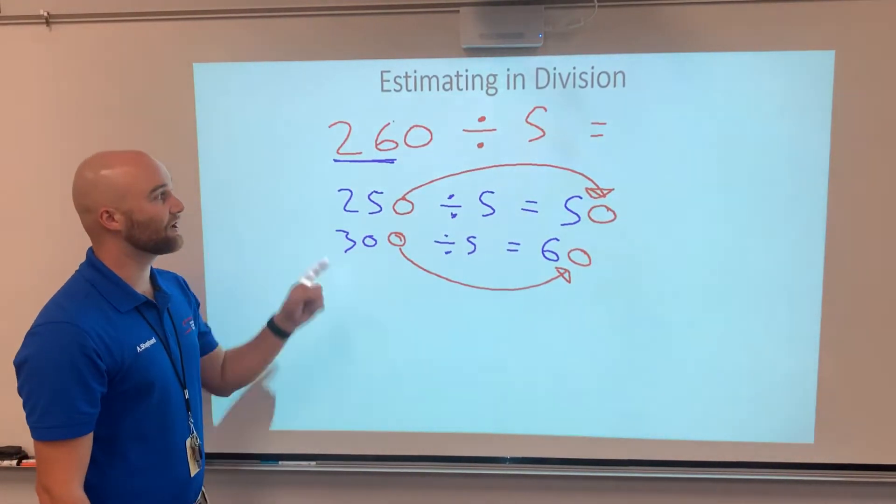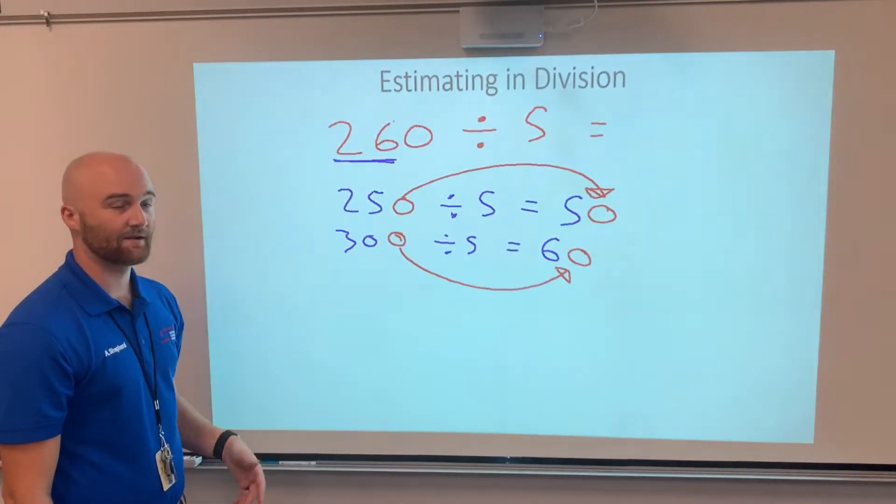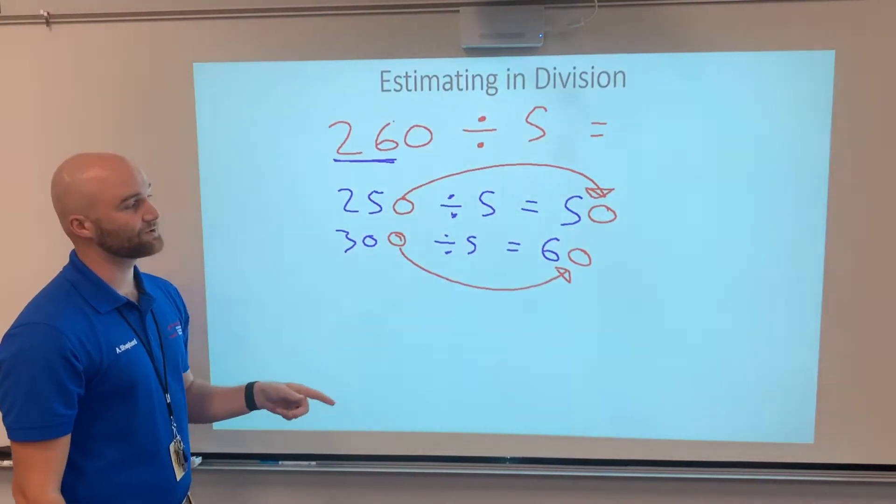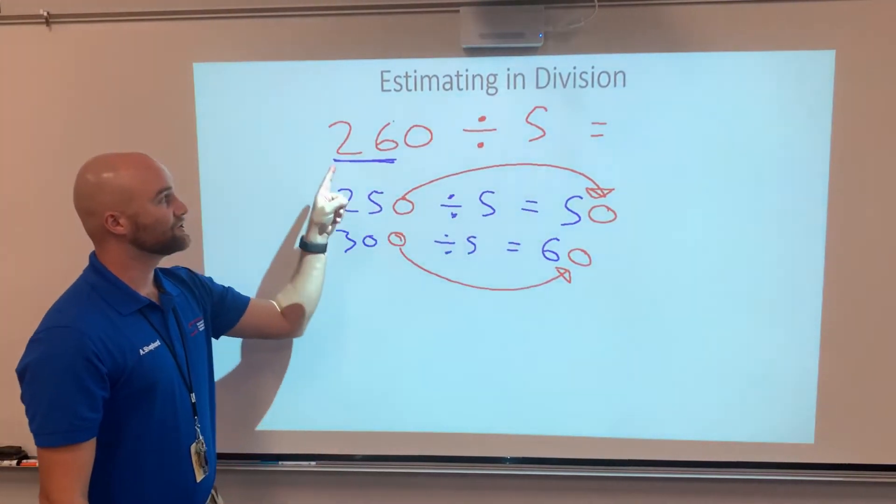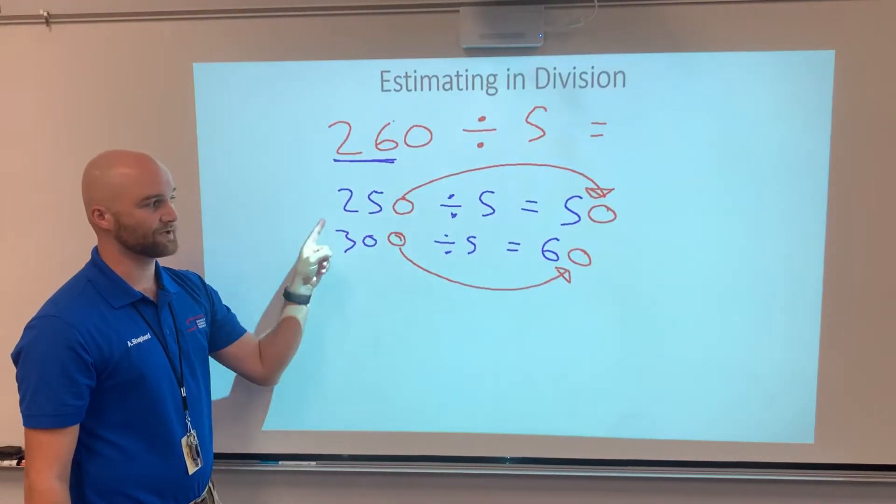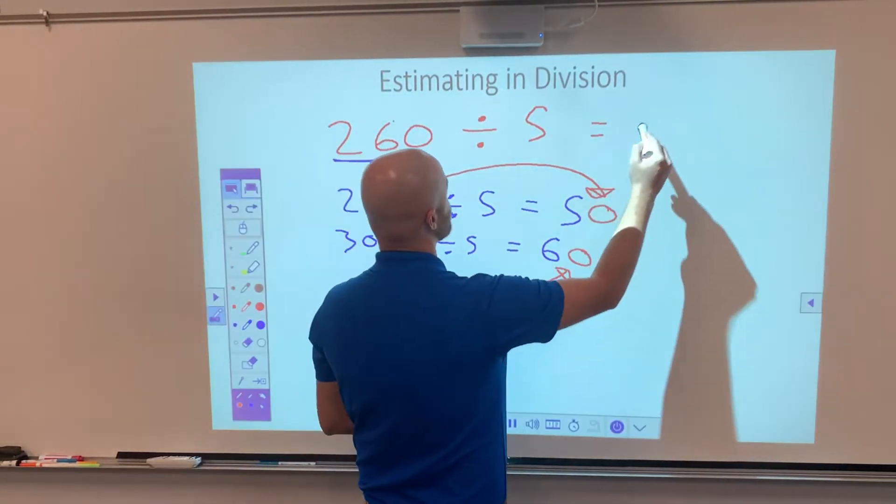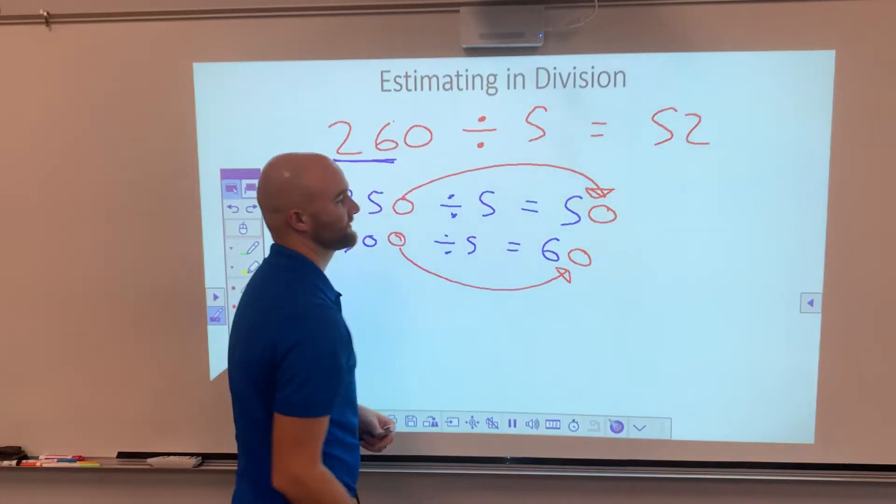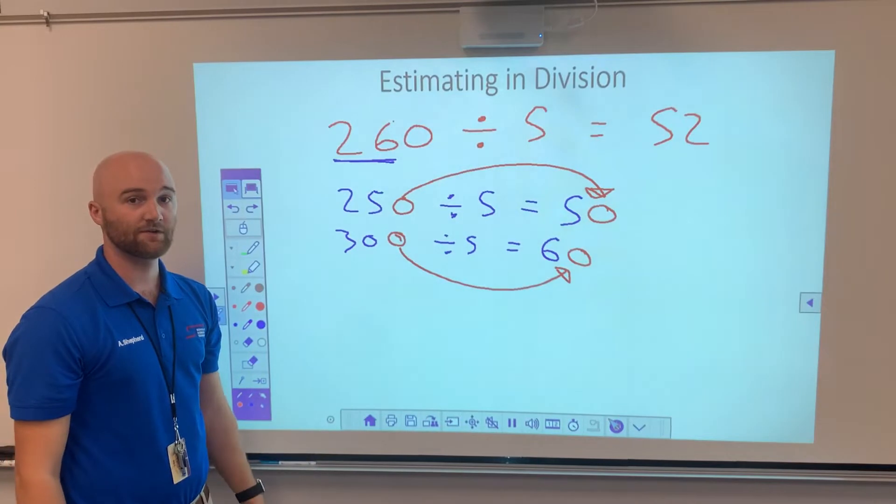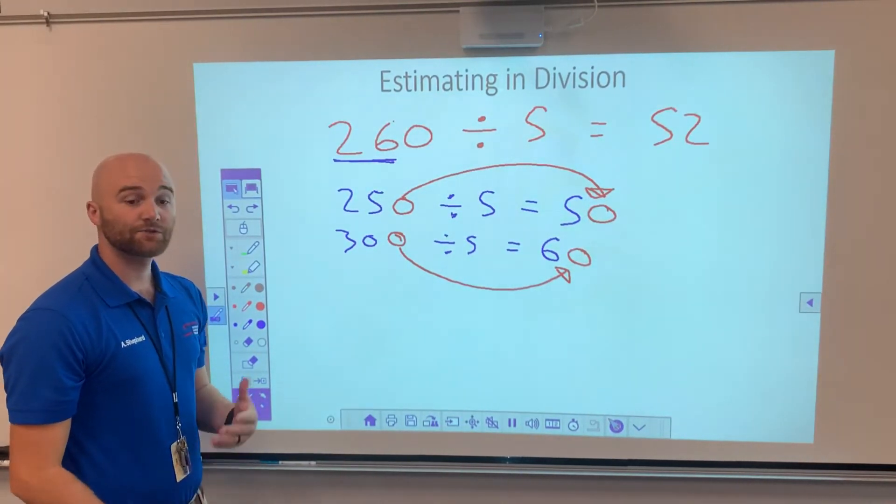Think in your head for a second. Do you think our answer is going to be closer to 50 or closer to 60? I think our answer is going to be closer to 50 because 260 is closer to 250 than it is to 300. And sure enough, if I divide it out, my actual answer will be 52. So it was closer to 50, but it was still within our range. 50 or 60, both would have been decent answers for us to guess. Let's try another one.